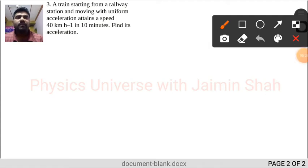Now the question is: a train starting from a railway station and moving with uniform acceleration attains a speed. Since it's starting from the railway station, initially that train will be at rest, so initial velocity is 0.